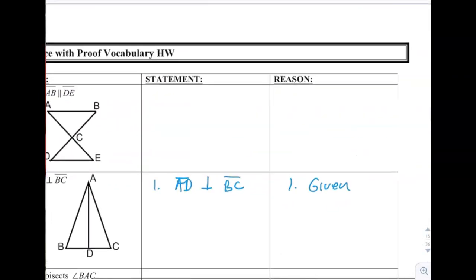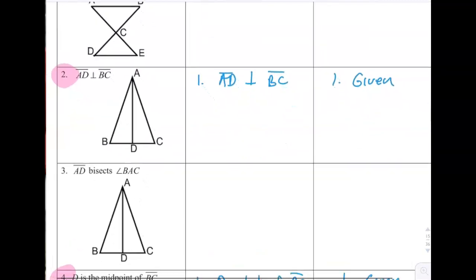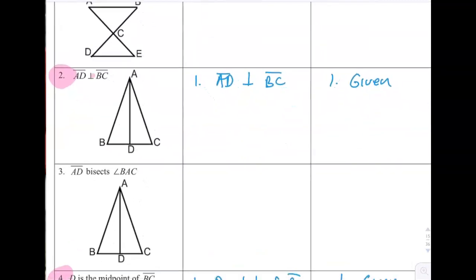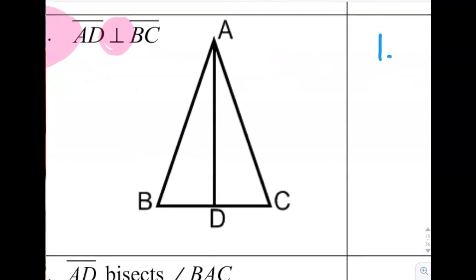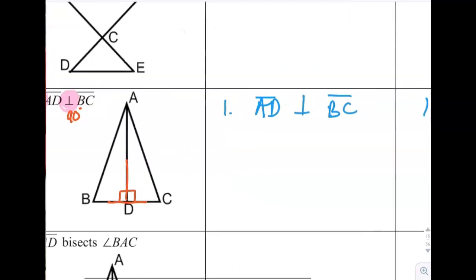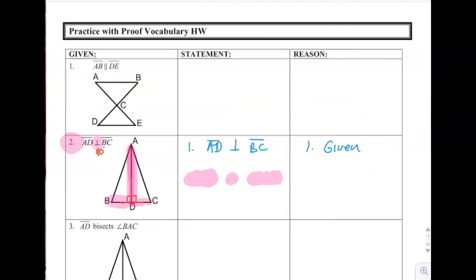Number 2 on the next page, page 15. AD is perpendicular to BC. So we talked about perpendicular, meaning 90. So if that's 90 right here, if both sides are 90, then they're the same as each other. So we say that angle, it's this angle here, ADB. So ADB is congruent to ADC, angle ADC, because perpendicular implies congruent 90 degree angles.